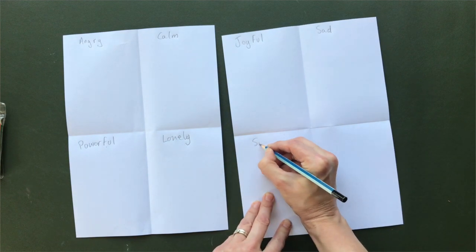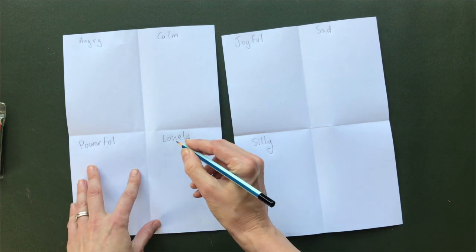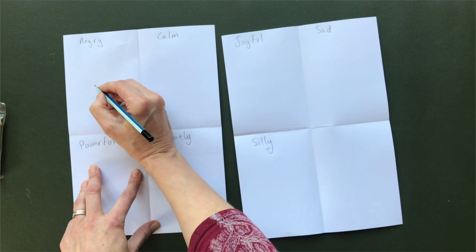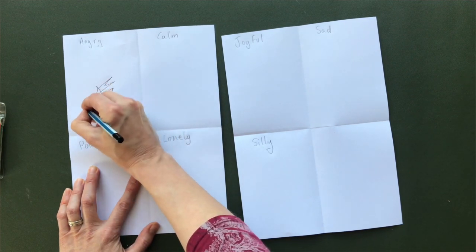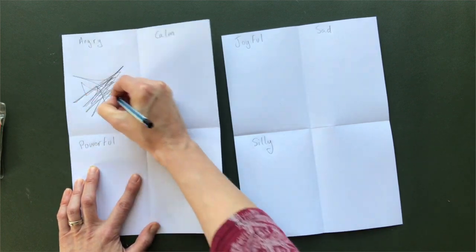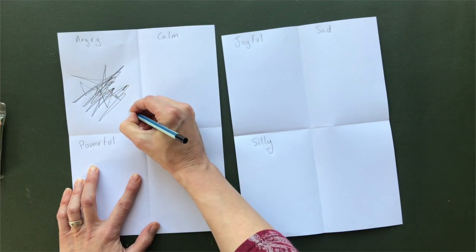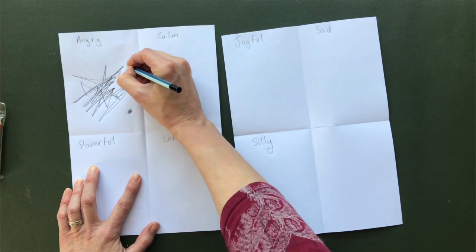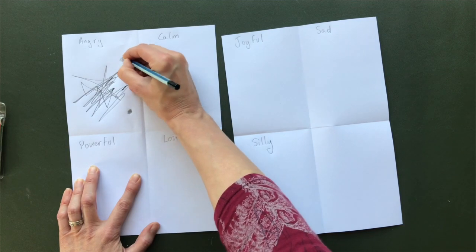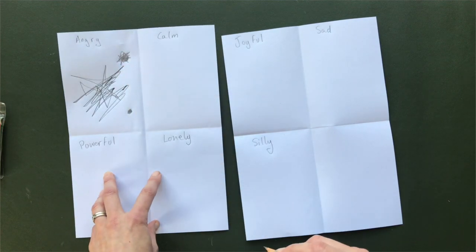Starting with angry. What does angry look like? If you feel angry, what line might that be? What line would represent angry? Is it really all over the page? Is it sharp edges? Is it just a tight little ball of anger? What type of angry do you feel?